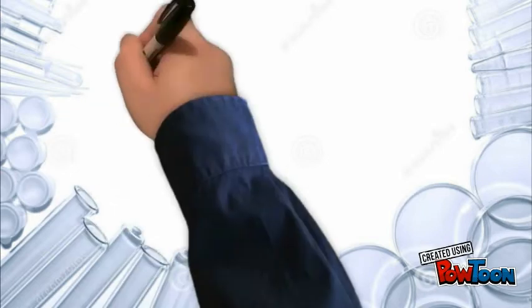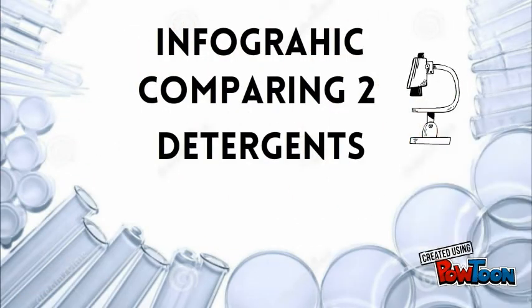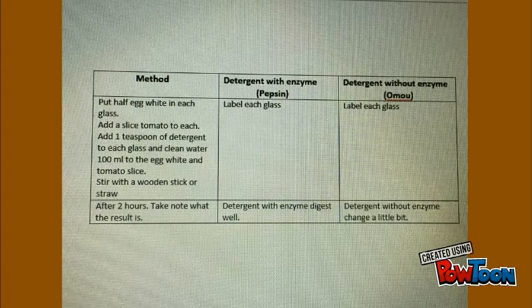Infographic comparing detergents. In this experiment, you need to put half egg white in each glass. Then add a sliced tomato to each glass. After that, add 1 teaspoon of detergent with enzyme in one glass and without enzyme in the other glass. Add 100 ml of clean water, then stir with a wooden stick or straw.